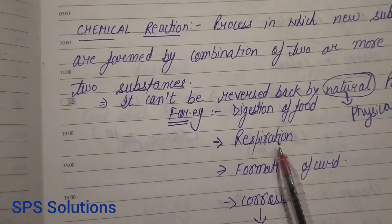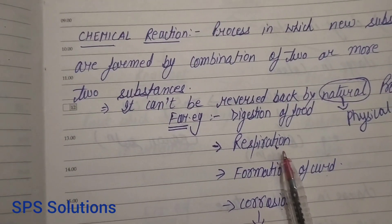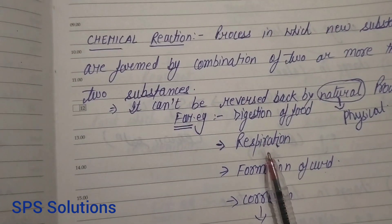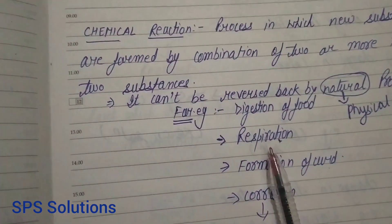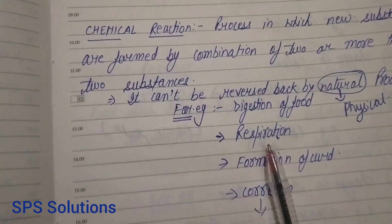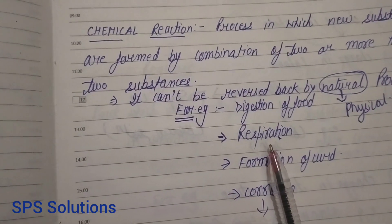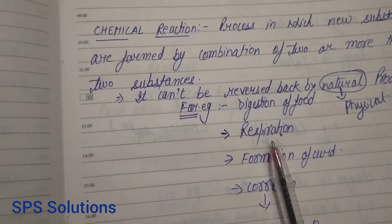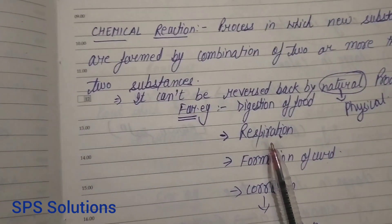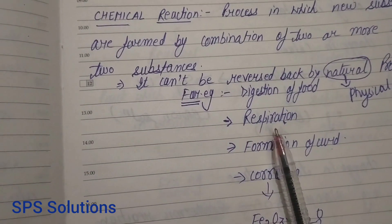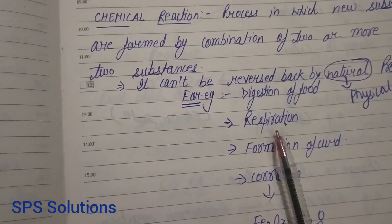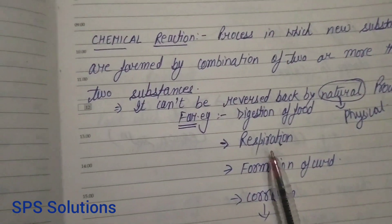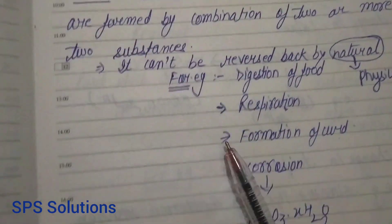The second example is respiration. Respiration is basically not just inhaling oxygen and exhaling carbon dioxide — that is breathing. Respiration is the oxidation of food. We eat food, and the oxidation of that food to produce energy is called respiration. So that is the exact definition of respiration.